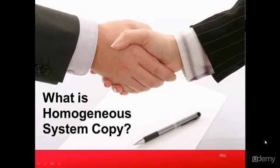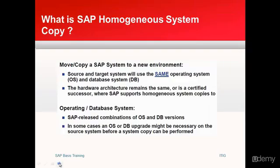Good morning everyone. Let's get started with our next topic in this training, which is on what is a homogeneous system copy. Homogeneous system copy is when we are trying to create a new system by moving or copying a system to a new environment. The source and target system will use the same operating system and database system, and the hardware architecture remains the same or is a certified successor of it — that is where SAP supports homogeneous system copies.